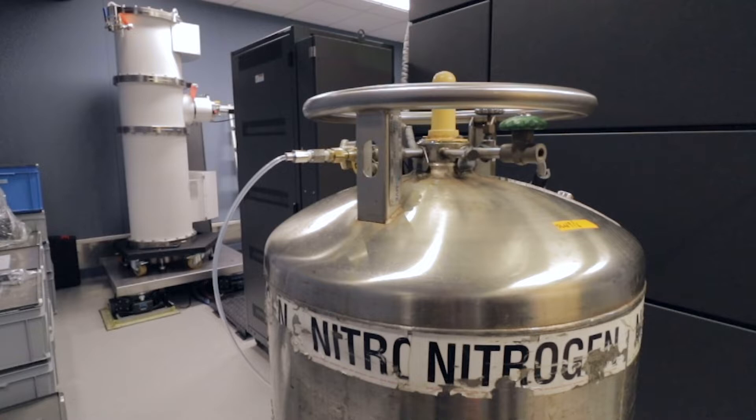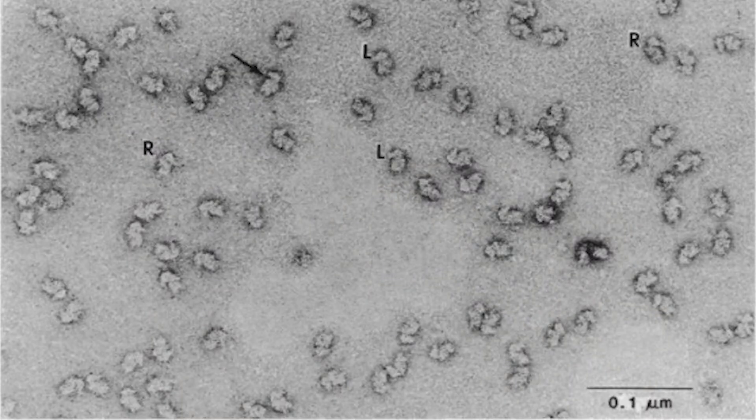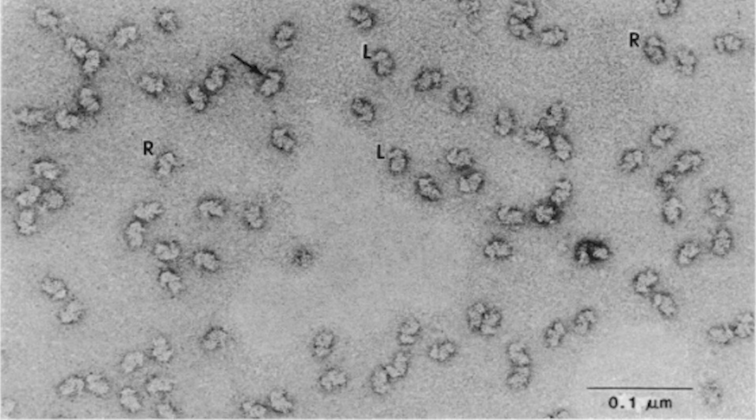In cryo-electron microscopy the molecules that we're interested in are very quickly frozen to the temperature of liquid nitrogen. Under these conditions the molecules cannot move anymore since there are so many molecules and they all have essentially identical structure.